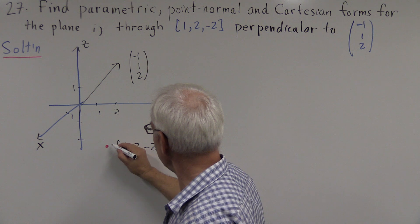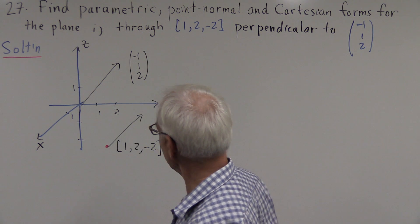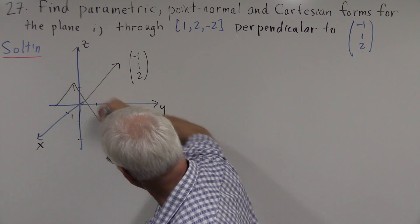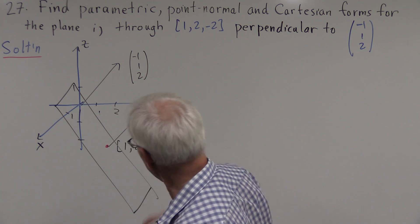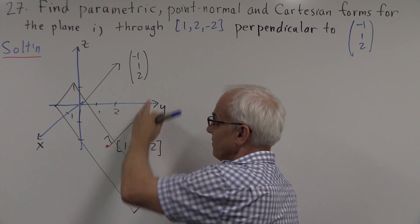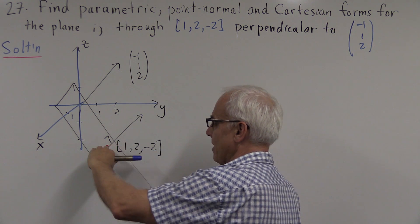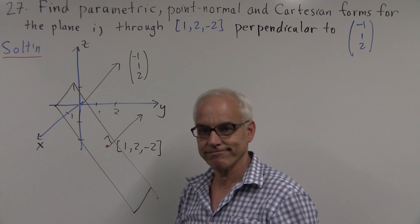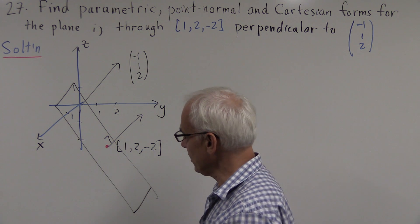So if we think about translating that vector to there, then we can visualize this plane as being the set of points which is perpendicular to the vector (-1,1,2) and happens to pass through there.